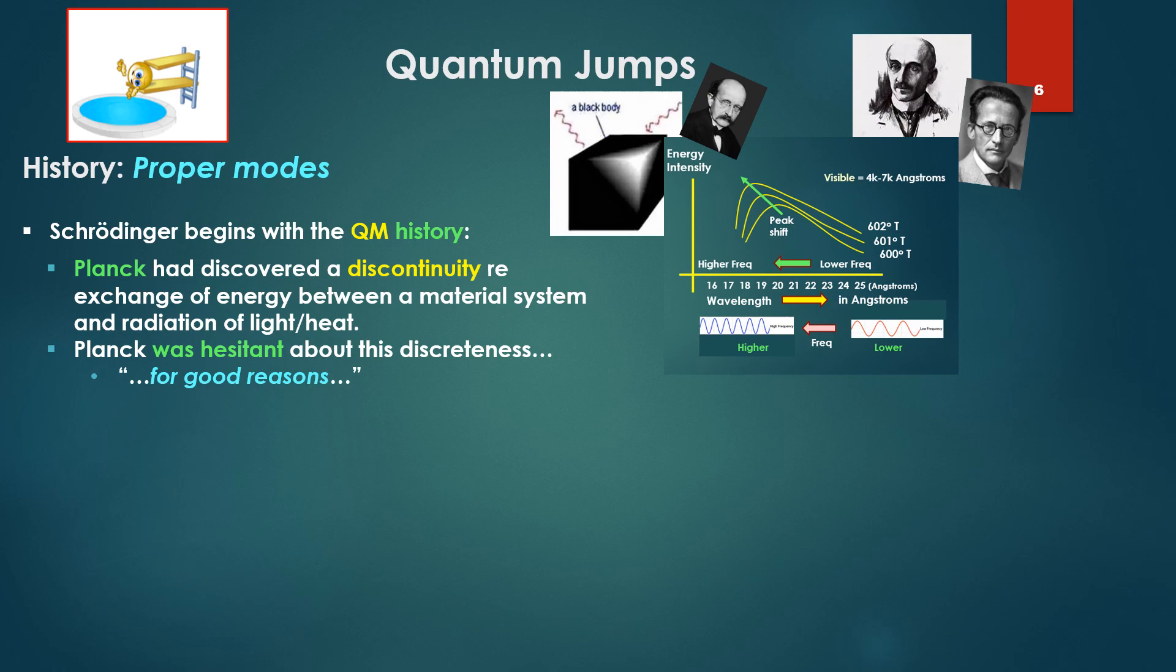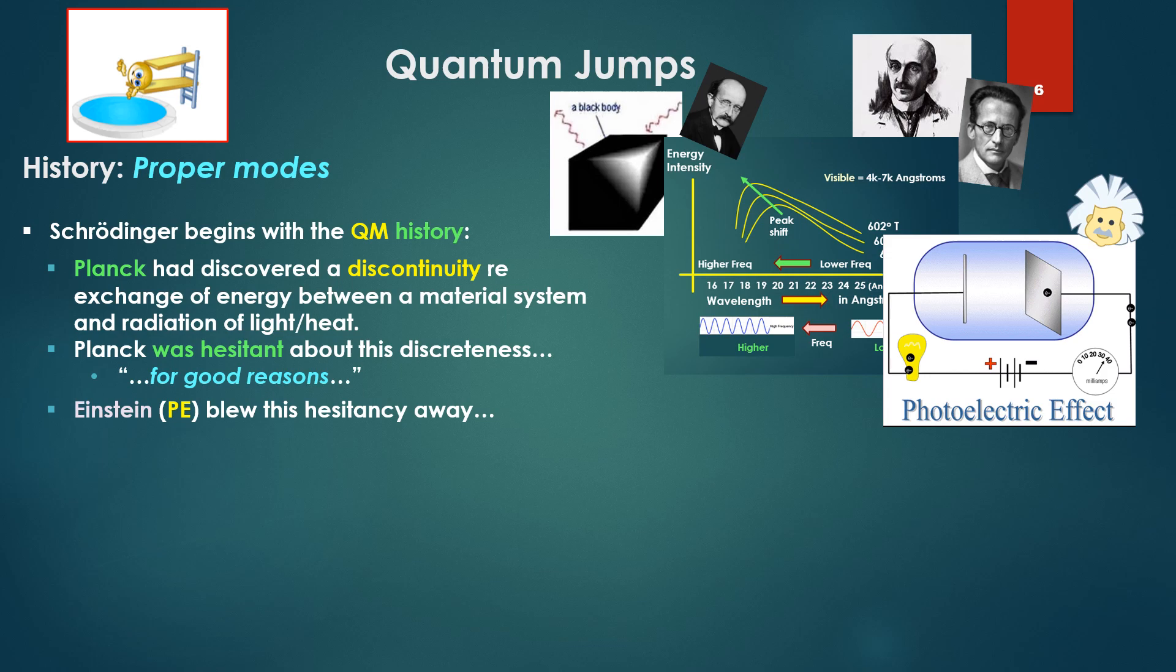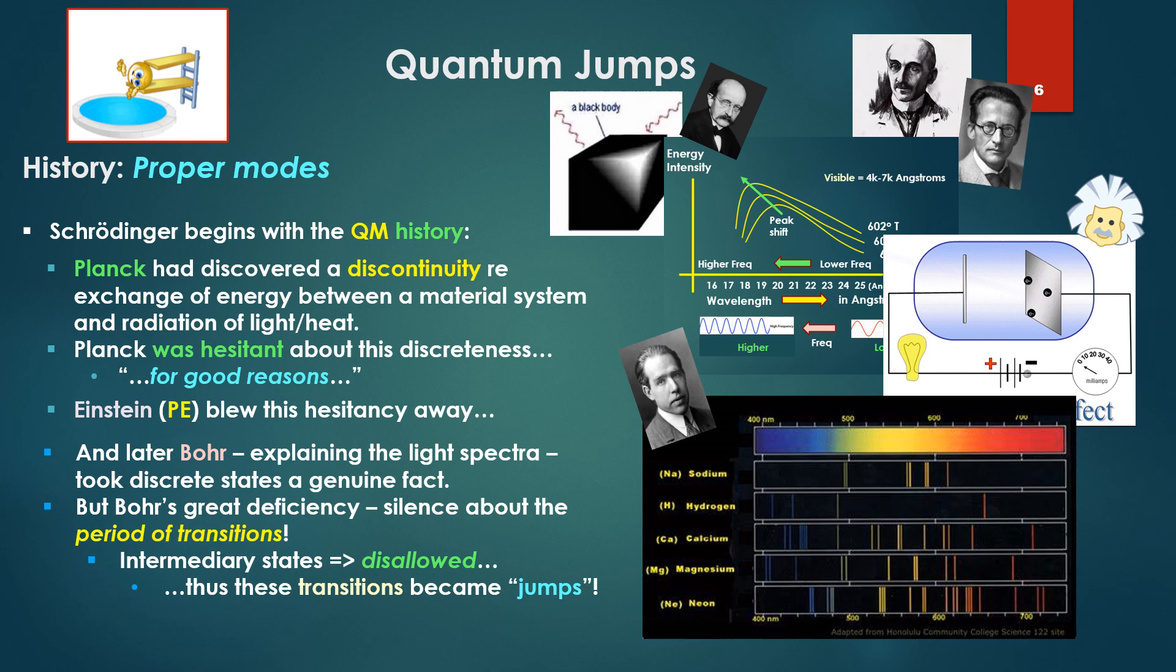Schrödinger begins with the quantum mechanic history. Planck had discovered a discontinuity of exchange of energy between a material system and radiation of light and heat. Planck was hesitant about this discreteness, and for good reason, Schrödinger notes. Einstein in the photoelectric effect blew this hesitancy away. And later, Bohr, explaining the light spectra, took discrete states as a genuine fact. But Bohr's great deficiency: silence about the period of transitions. Intermediary states were disallowed. Thus, these transitions became jumps.